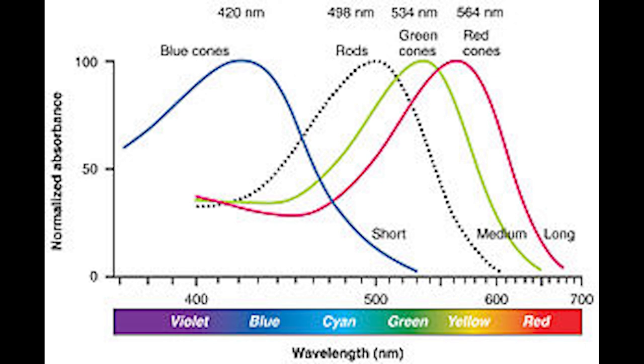We typically have three types of cones with different absorption curves that are a function of differences in their pigment. Cones support color vision. Rods are best at absorbing light in the bluish-greenish range, even though they don't really factor into color vision much. The cones are in their highest concentration for central vision — where you're focusing on and looking — and they trail off from there, with rods out in the periphery.